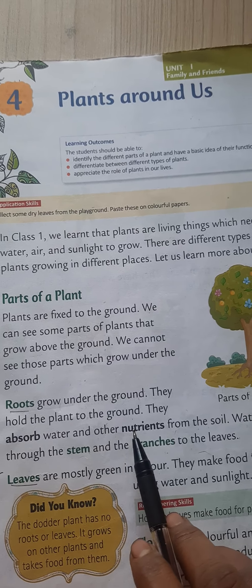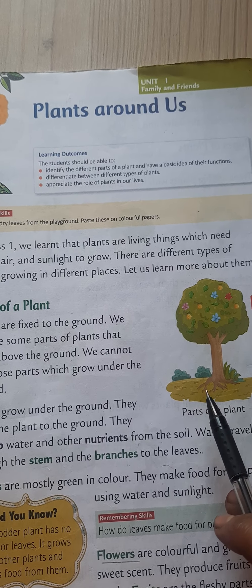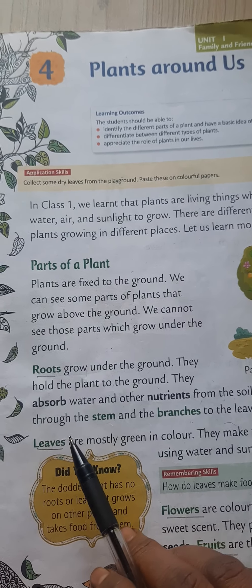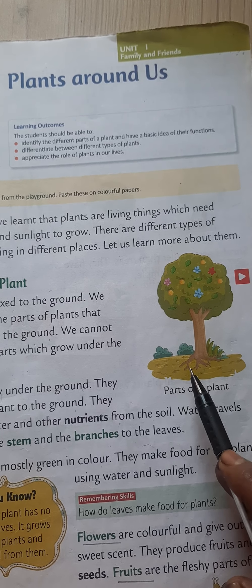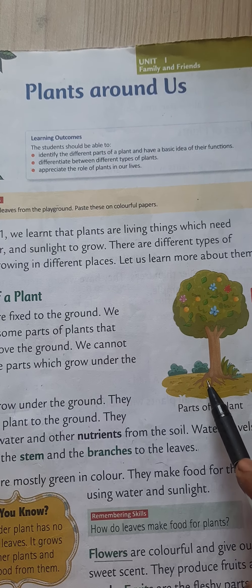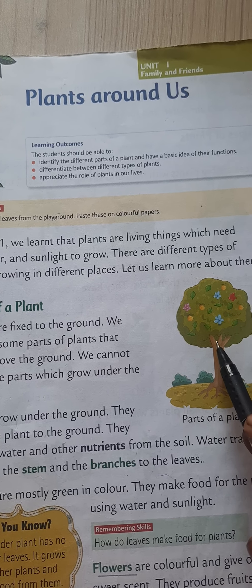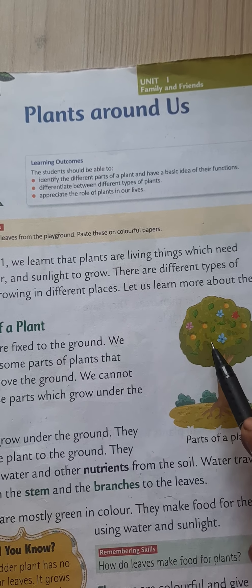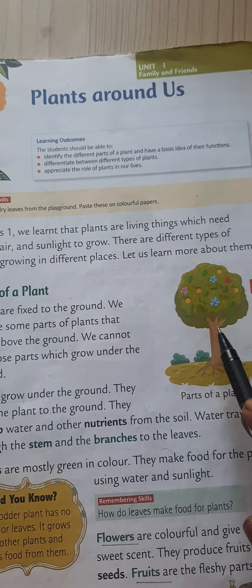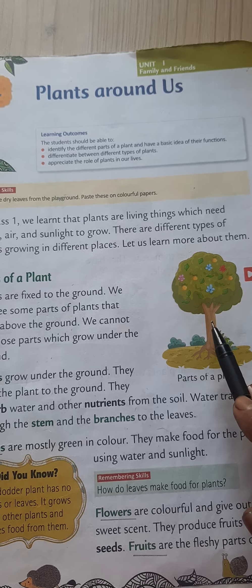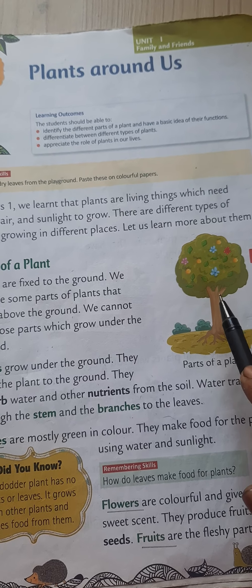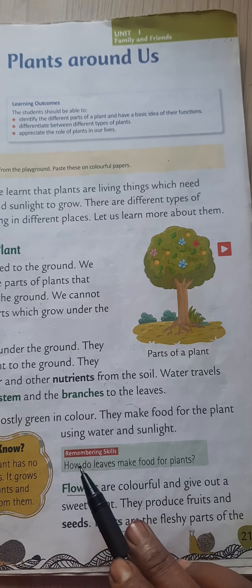Roots absorb water and other nutrients from the soil. Water travels through the stem and the branches to the leaves. The roots absorb the water and other nutrients, pass them to the stem, and the stem takes them forward to the branches and leaves. The leaf, with the help of water, nutrients, and sunlight, prepares the food. So the leaf is called the kitchen of the plant. Leaves are mostly green in color and they make food for the plant using water and sunlight.